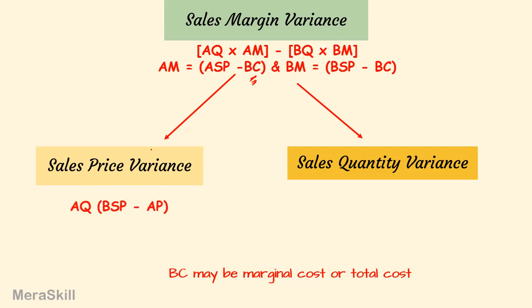Price variance as usual is the difference in the selling price: budgeted selling price minus the actual selling price, into actual quantity. Similarly, the sales quantity variance will be the budgeted margin into budgeted quantity minus actual quantity.